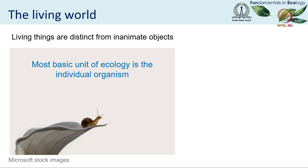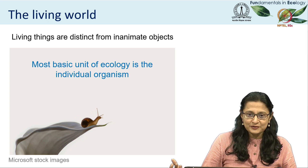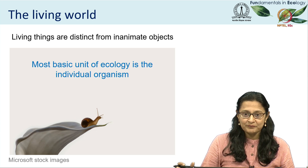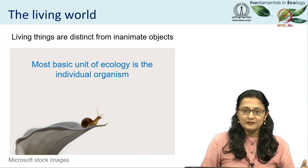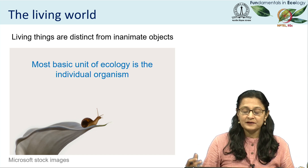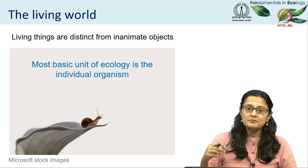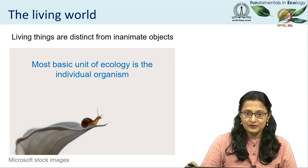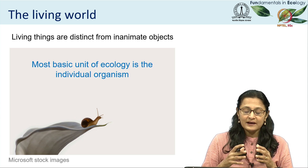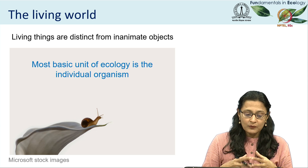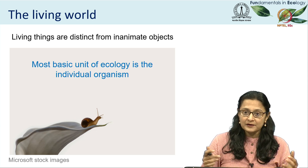I'm going to start with a very silly statement — that living things are distinct from inanimate objects. Well, of course they are. But in what way are they components of the environment that matter in our understanding of ecology? Individuals are actually the most basic unit of ecology and this is where we must begin. When we begin at the individual level, we have to think about why that individual is shaped or designed in the way it is.